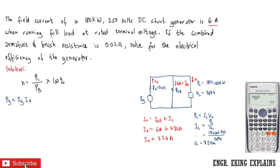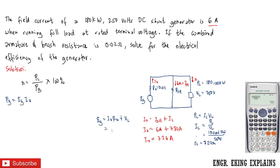Now that we have our armature current, we solve for the generated EMF. The generated EMF equals the voltage drop across the armature plus the voltage across Rsh. The voltage across Rsh equals VL, since they are in parallel. The voltage drop across the armature equals IA times Ra plus the terminal voltage. So that is 726 amperes times 0.02 ohms plus 250 volts.